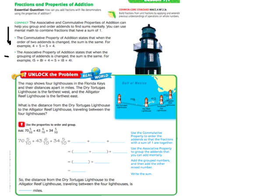The associative property of addition states that when the grouping of addends is changed, the sum is still the same. For example, (5 plus 8) plus 4 is equal to 5 plus (8 plus 4). In other words, the associative property means that you can change the numbers in the parentheses. The parentheses are what we're supposed to do first, so you can change the numbers around to add different numbers first rather than going from left to right.